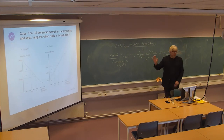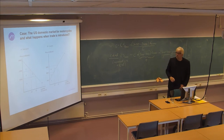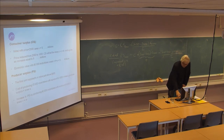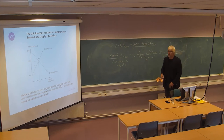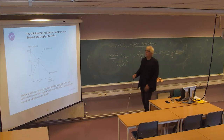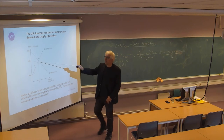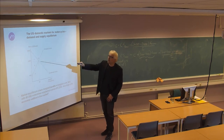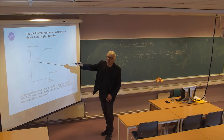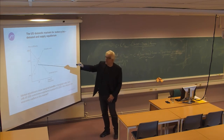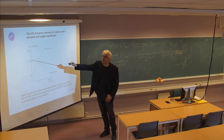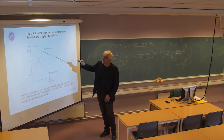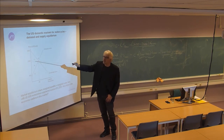Is this understandable so far? Okay. Then we can combine this. We combine the demand curve and the supply curve and we get an equilibrium where the marginal willingness to pay for the last motorbike sold in the market is equal to the marginal cost of producing the same bike — $2,000.